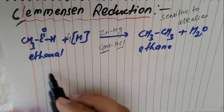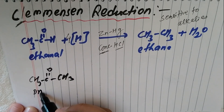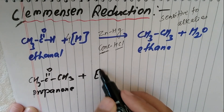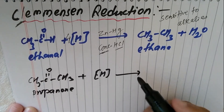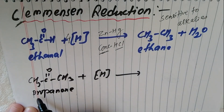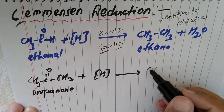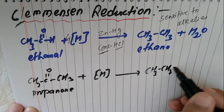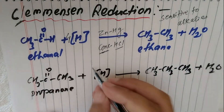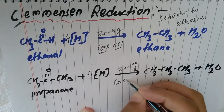For ketones: CH₃COCH₃ (acetone or propanone) is reduced using concentrated HCl and zinc amalgam (Zn/Hg). The product formed is propane (CH₃CH₂CH₃) — propanone to propane, a three-carbon alkane — plus water and four H. The reagent used is Zn/Hg and concentrated HCl.